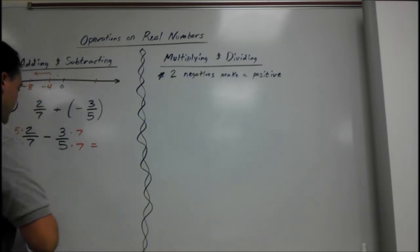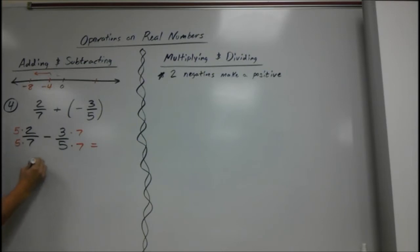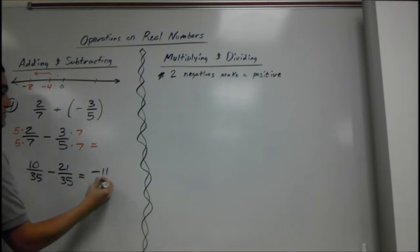Last step. Multiply these out. 5 times 2 is 10 over 35 minus 21 over 35. And you're just minusing the top. So we have 10 minus 21. Using that real number line, we get negative 11 over 35.